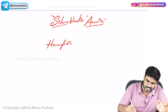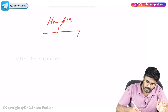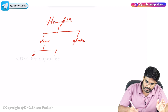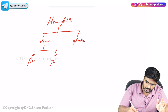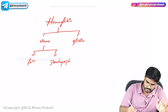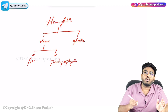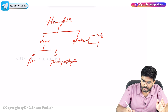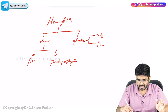The problem in sideroblastic anemia is with protoporphyrin. Recall that hemoglobin is made up of heme and globin. Heme is made of iron and protoporphyrin. Globin consists of two alpha globin chains and two beta globin chains.